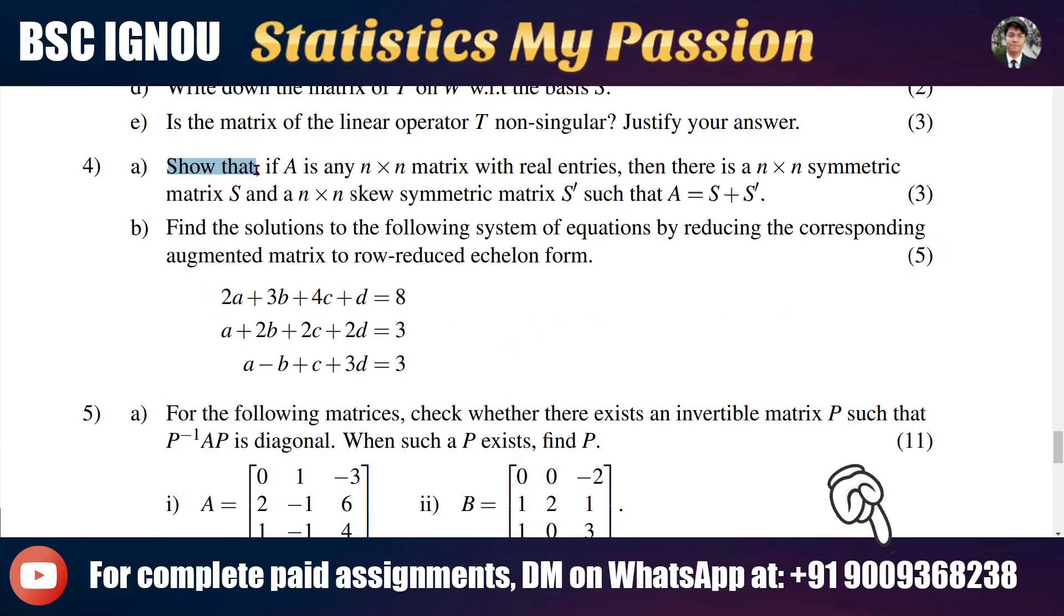Question first part A says that show that if A is any n by n matrix with real entries, then there is an n by n symmetric matrix S and an n by n skew symmetric matrix S dash such that A